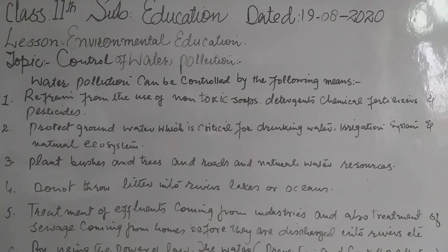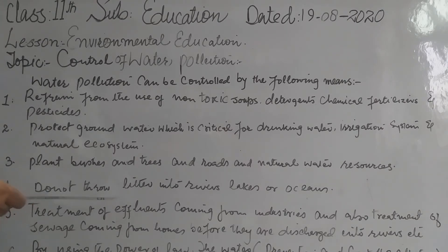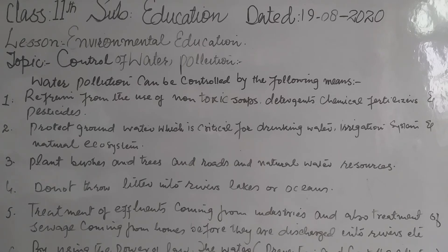Number four: do not throw litter into rivers, lakes or oceans. Help clean up any litter you see on beaches or in rivers and lakes. Make sure it is safe to collect the litter and put it in any nearby dustbin.